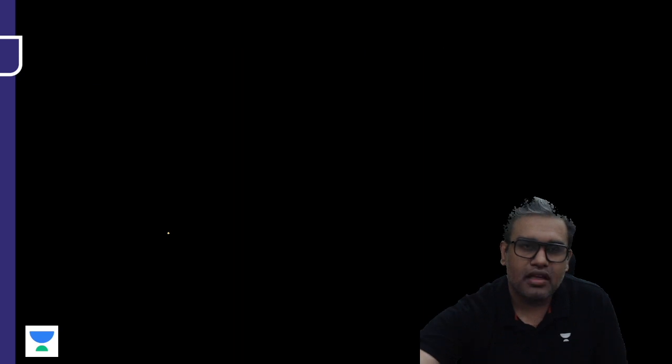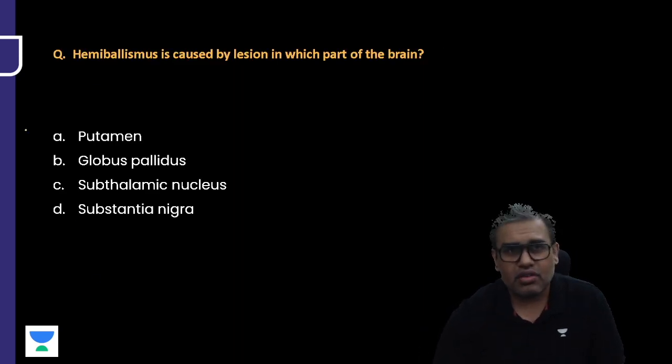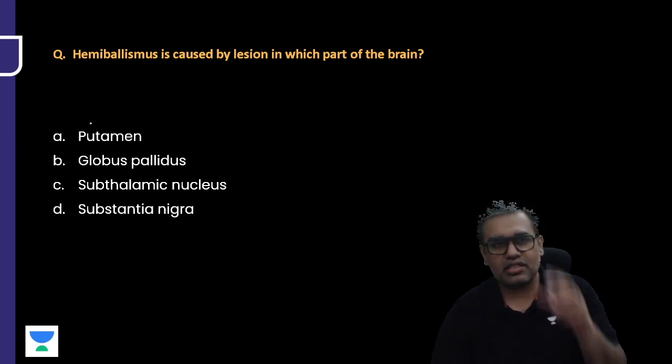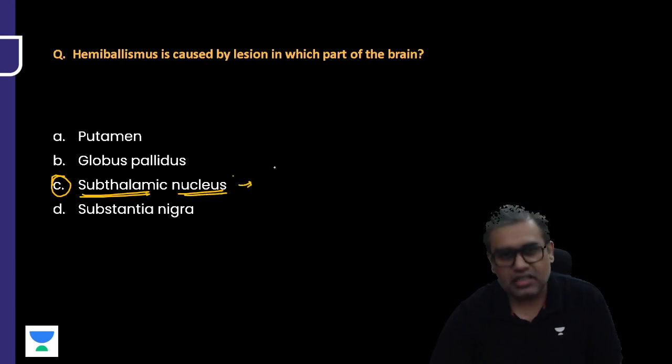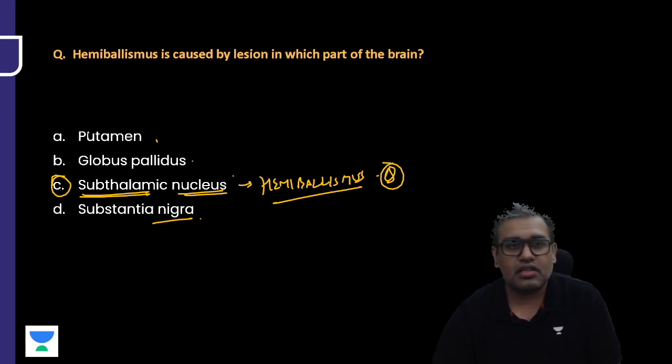Next question: Hemiballismus is caused due to lesion in which part of the brain? These questions have been asked for quite a number of years. Hemiballismus is due to lesion of a basal part of the basal ganglia or basal nuclei, that is the subthalamic nucleus. If there is an issue here, the patient shows signs of hemiballismus. Remember this, it's a repeated question, single liner, and often asked. Globus pallidus, substantia nigra are for Parkinsonism. Chorea is seen in corpus striatum, but hemiballismus is for subthalamic nucleus.